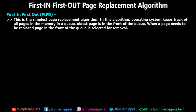Let's start off with the first page replacement algorithm: First In First Out. As the name suggests, this is the simplest page replacement algorithm. The operating system keeps track of all pages in the memory in a queue, and the oldest page is at the front of the queue. Whenever a page needs to be replaced, the page at the front of the queue is selected for removal. Let's solve a numerical, because that is the best way to understand FIFO.